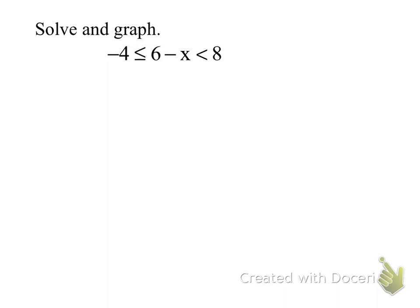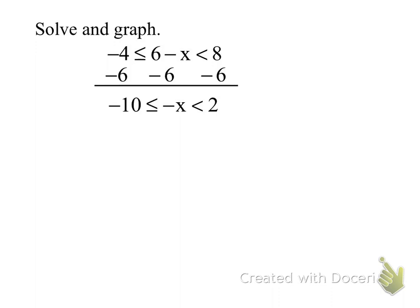They're getting more tricky. What do I do first? We always undo addition and subtraction first — subtract from all three sides. That gives us negative 10 is less than or equal to negative x, which is less than 2. Now I need to multiply or divide by negative 1 to isolate x. And when I do that, I have to switch both inequality signs because I'm multiplying by a negative — I have to flip the inequality.